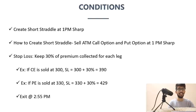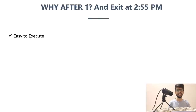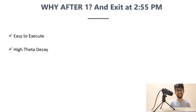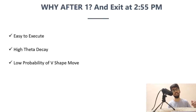Why are we entering after 1 pm and exiting at 2:55? First, it's easy to execute — why sit from morning adjusting positions? Just enter at 1, come out at 2:55. During this two-hour window you get the highest theta decay, even on a Thursday. There's also low probability of V-shape moves in the afternoon. If the market dips in the morning and recovers in the afternoon, by entering late you avoid that volatility.